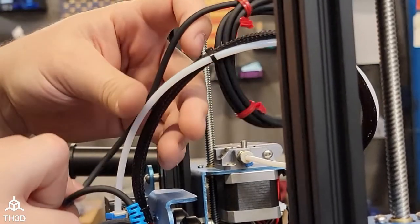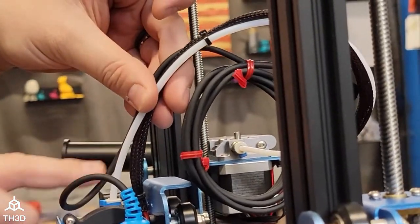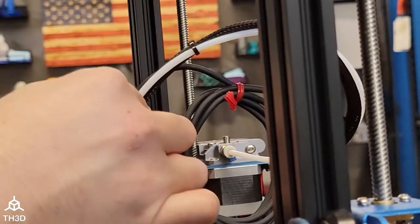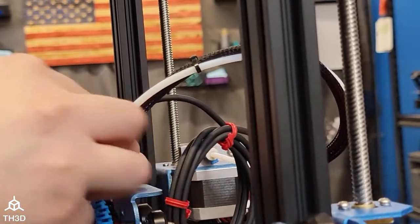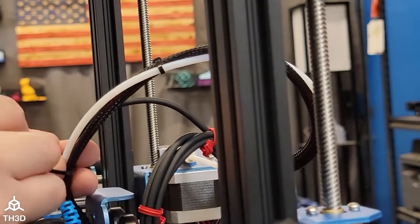We want to leave a little droop of wire with some slack down here. This is how we're going to secure the cable. Take one of the included zip ties and secure the wire to your existing wiring harness.